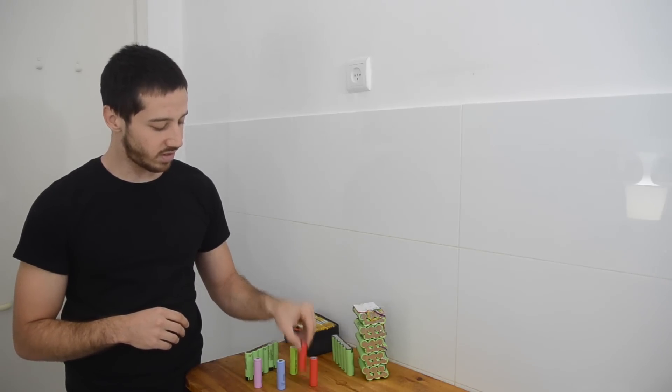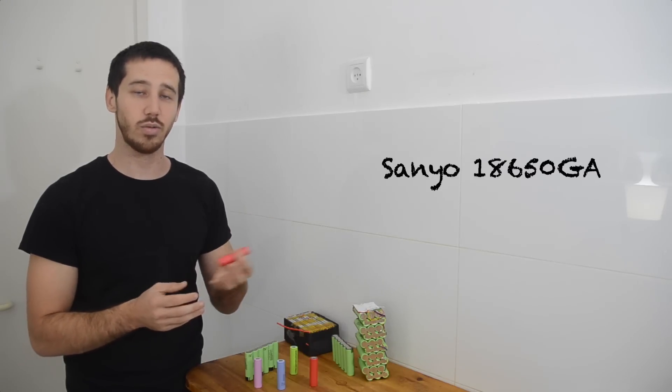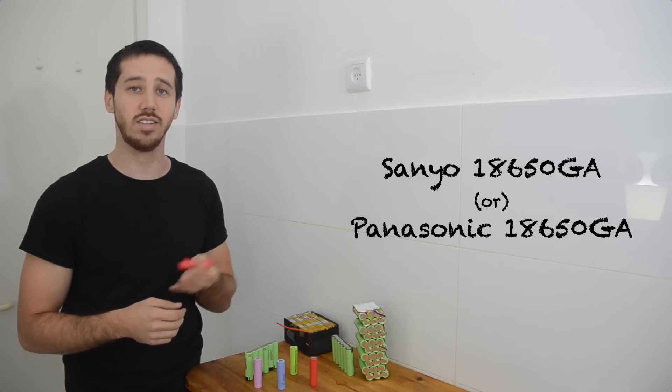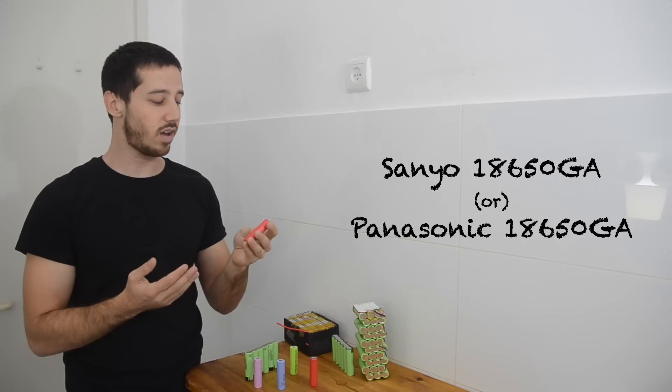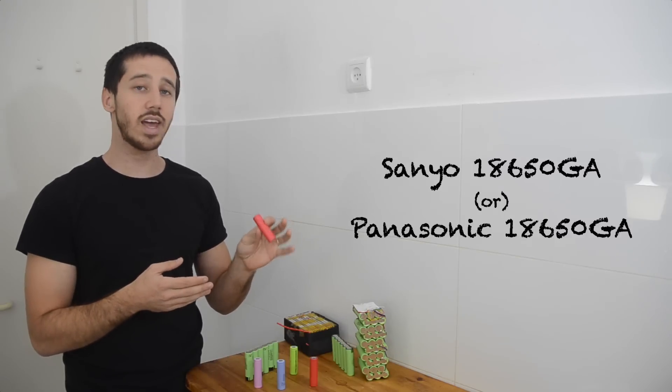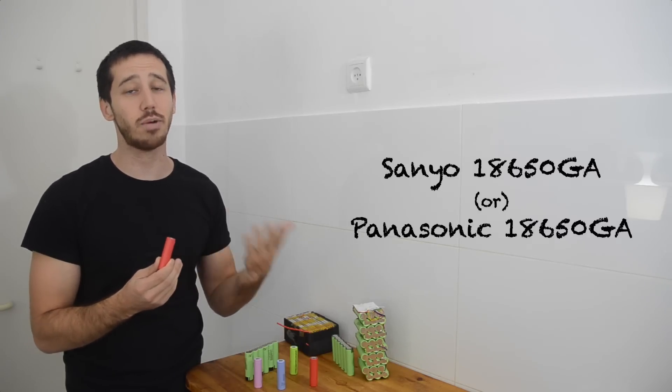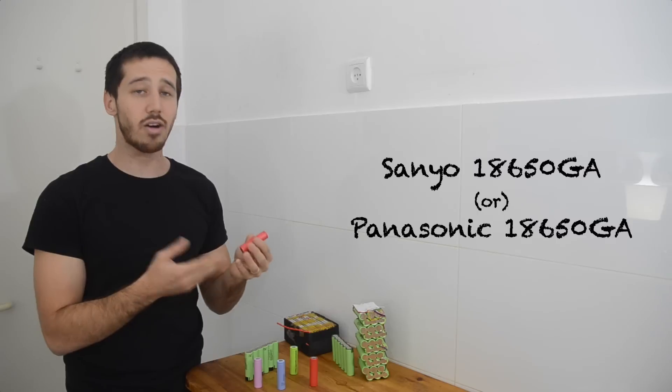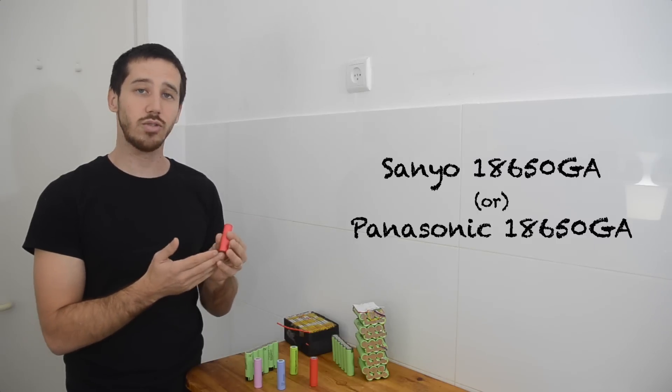And then lastly I've got these 18650GA cells by Sanyo, which was purchased by Panasonic. So some people call these Panasonic 18650GA cells. And these cells I really like. These are high capacity, they're three and a half amp hours each. And they can handle up to 10 amps continuous. Now they get really hot when you bring them up to 10 amps so I don't push them that high. But they are good for higher power applications. But you want to make sure you use enough in parallel.